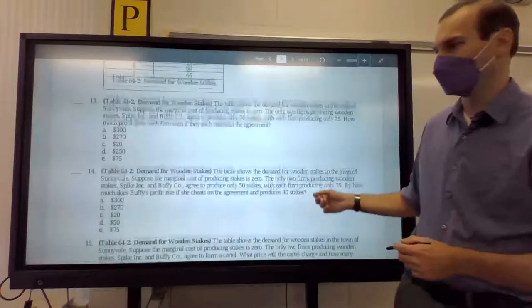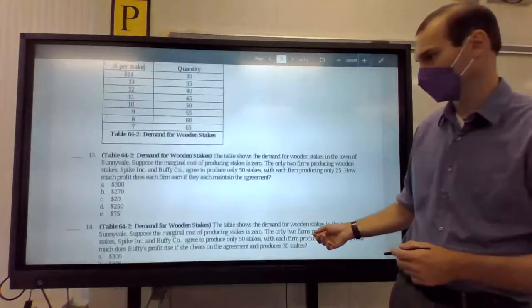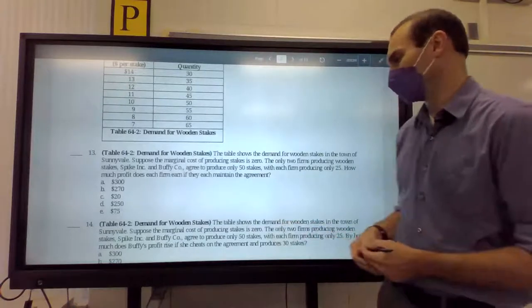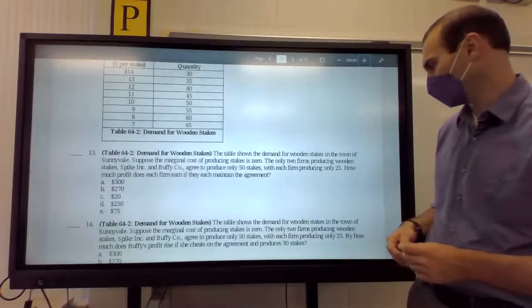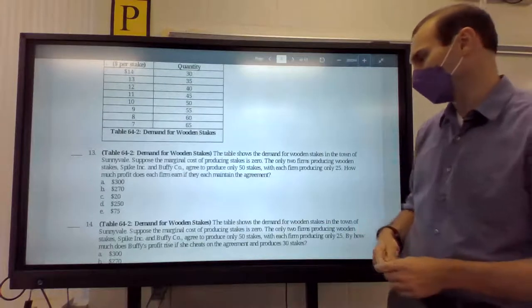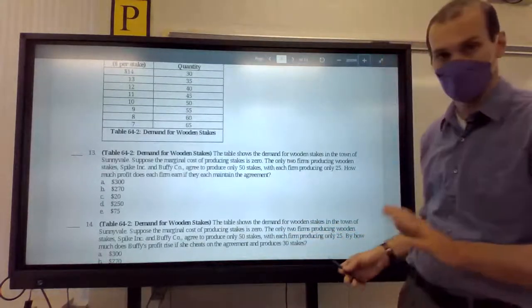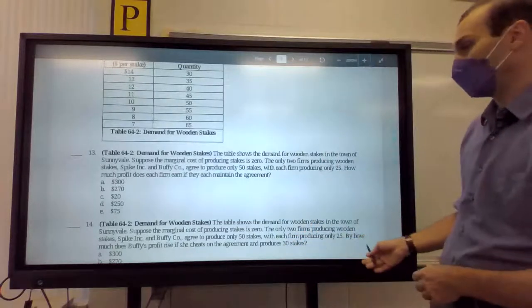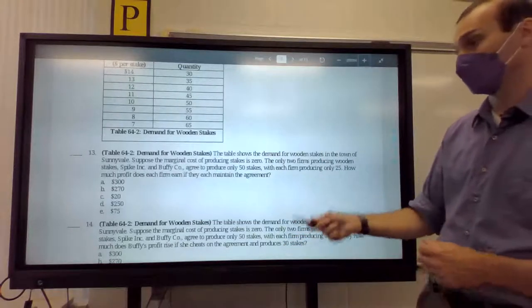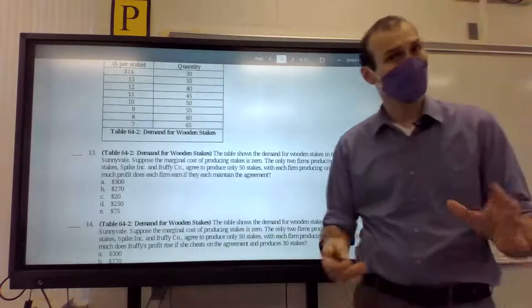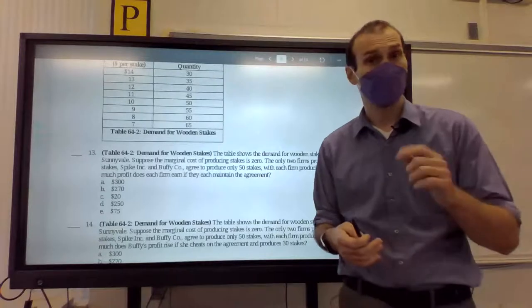Okay. Let's go ahead and move on to 14. It's right there. The table shows the demand for wooden stakes in the town of Sunnydale. So, the marginal cost of producing stakes is zero. The only two firms producing wooden stakes, Spike and Buffy, agree to make 50 stakes, each make 25. Okay. So, we're back to where we were. By how much does Buffy's profit rise if she cheats on the agreement and produces 30 stakes? All right. There's levels to this question. That's what makes it a good one.